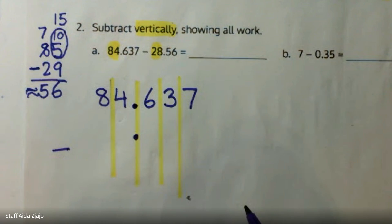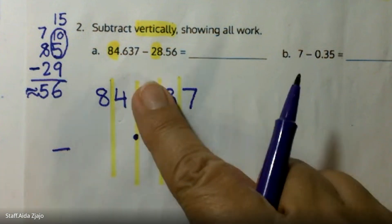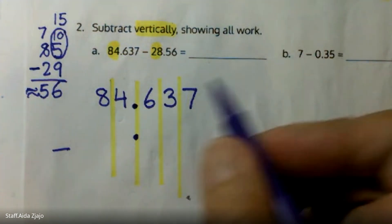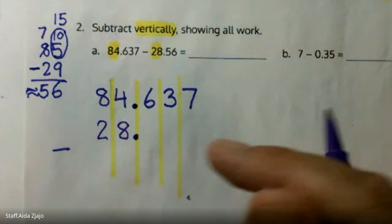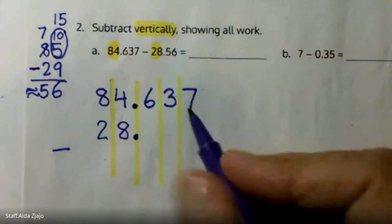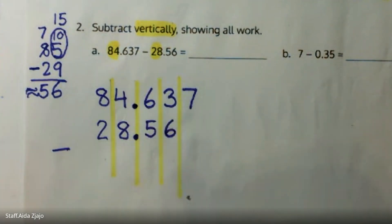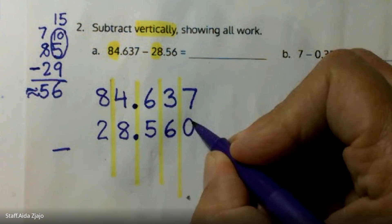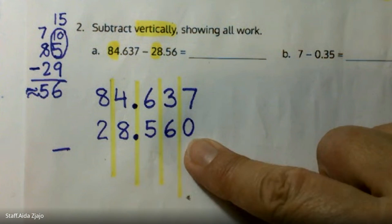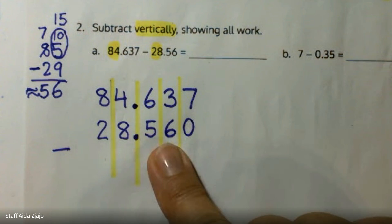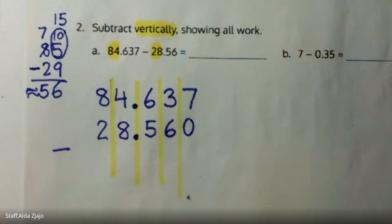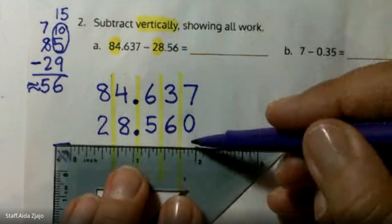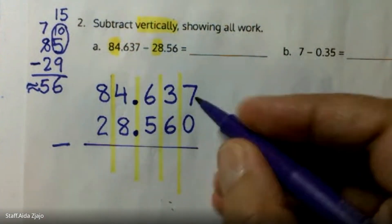Now I'm looking at the second number. I need to do subtraction, so I'm going to put my operation sign. To the left I have 28 whole dollars. Then I have 5 tenths and 6 hundredths. The second number did not have thousandths, but I am allowed to add a zero — it's like an empty chair; nobody sits there but it's still a place for thousandths. 56 hundredths can be made into 560 thousandths. Once I add the zero, I can start working on my subtraction.